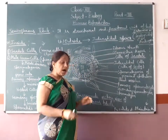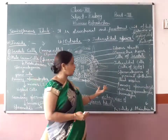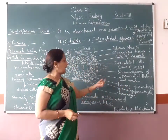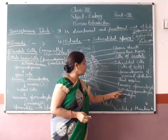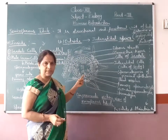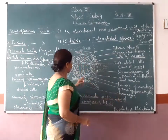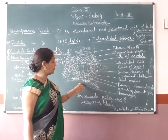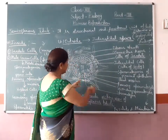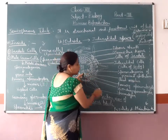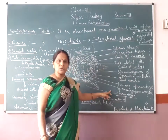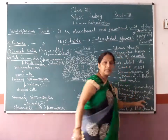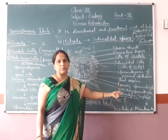These primary spermatocytes undergo meiotic division. In the case of spermatogonia, meiosis occurs twice. The first meiosis occurs in primary spermatocytes and forms secondary spermatocytes. Then the second meiosis occurs and forms spermatids. These spermatids grow into spermatozoa. Spermatozoa is the haploid cell and it is the male gamete.